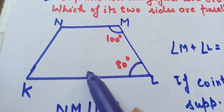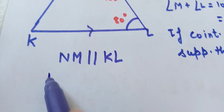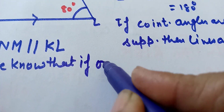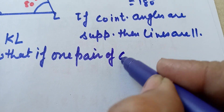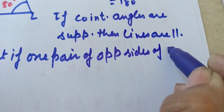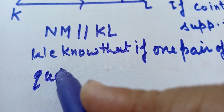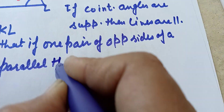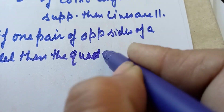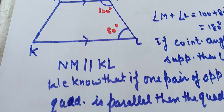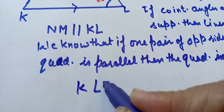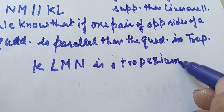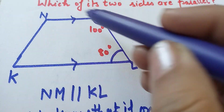Now one pair of opposite sides is parallel. We know that if one pair of opposite sides of a quadrilateral is parallel, then the quadrilateral is a trapezium. It means KLMN is a trapezium with KL parallel to MN.